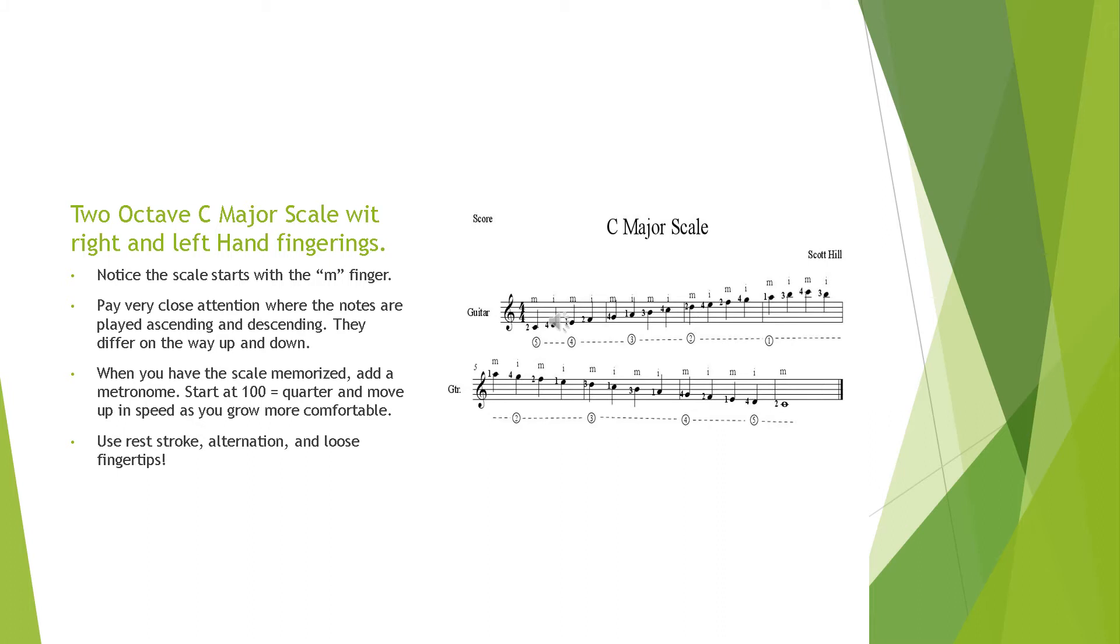Beside all the notes you'll see one, two, three, and four. Those are the left-hand fingerings. So the first note C, you can see a two beside it so you use your second finger. And then the next note D, you'd see a four beside that one so you use your fourth finger on the D.